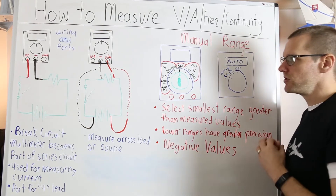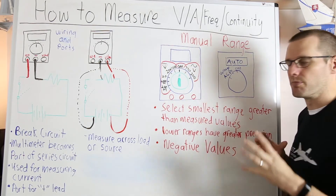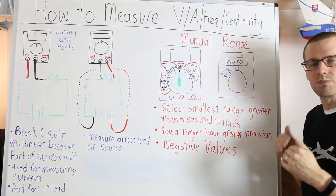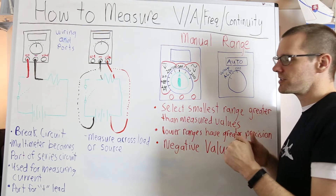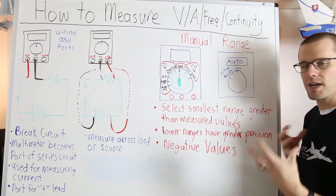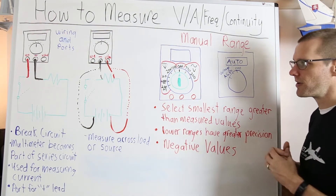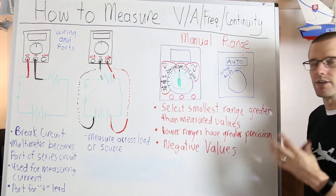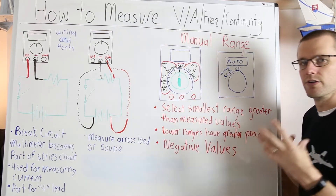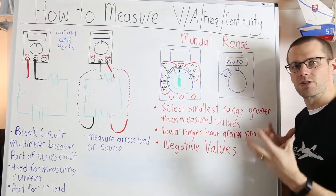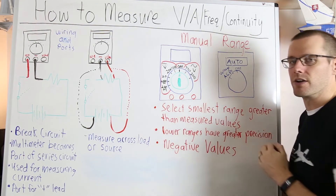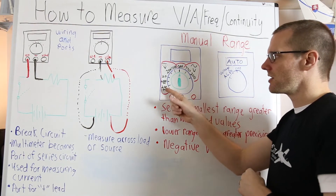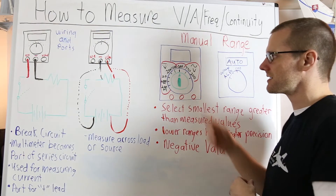Let's run through an example using 50 volts. We have DC voltage settings ranging from 1000, 200, 20, and 200 millivolts. Following our rule — select the smallest range higher than the value being measured — 50 volts is our measured value, so the next acceptable range is 200 volts. That's the smallest range above the measured value. 20 volts would be too small and we would not read the correct value. For a 1.5 volt battery, 1.5 volts is less than 2000 millivolts which represents 2 volts, so we could use that setting since 200 millivolts would be too low.